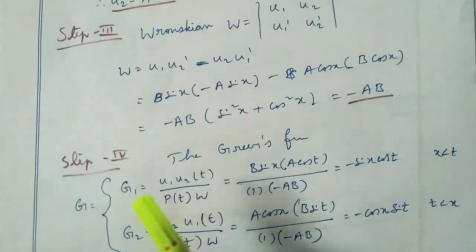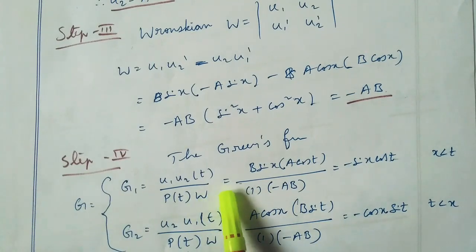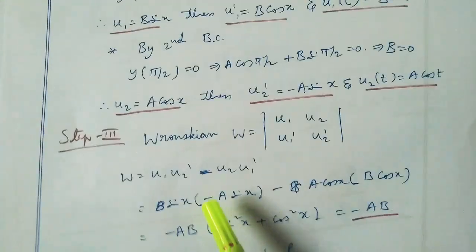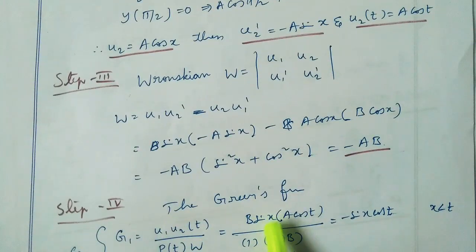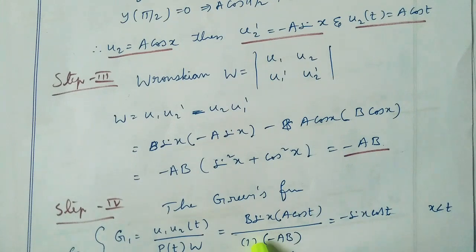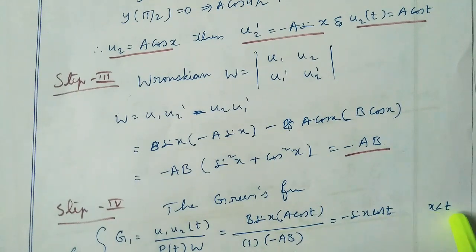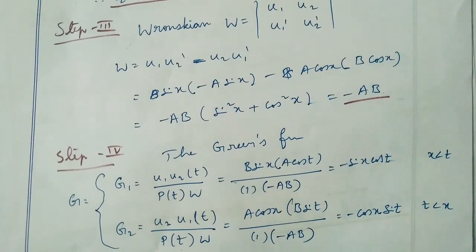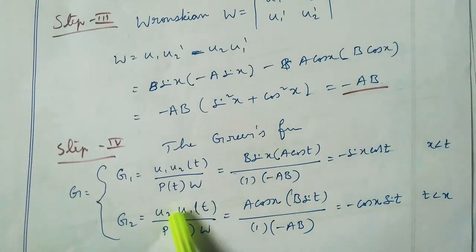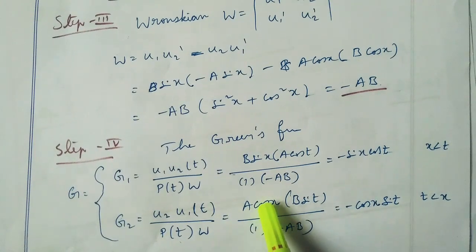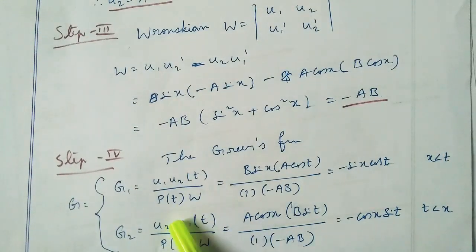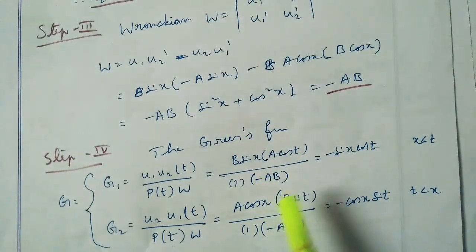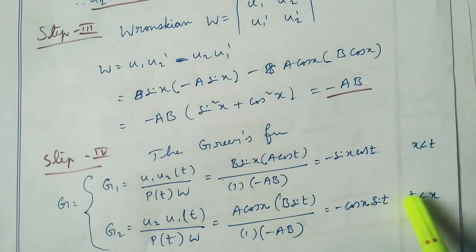Step 4: the Green's function g1 equal to u1·u2(t) divided by p(t)·W, which equals b·sin x into a·cos t, divided by 1 into minus ab. This equals minus sin x·cos t for x less than t. And g2 equal to u2·u1(t) divided by p(t)·W, which equals a·cos x into b·sin t divided by minus ab, giving g2 equal to minus cos x·sin t for t less than x.